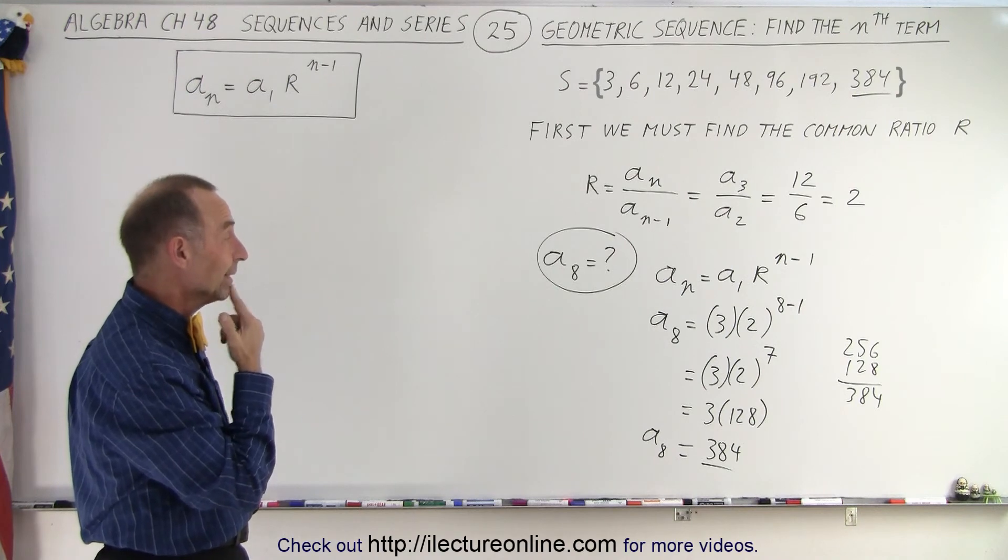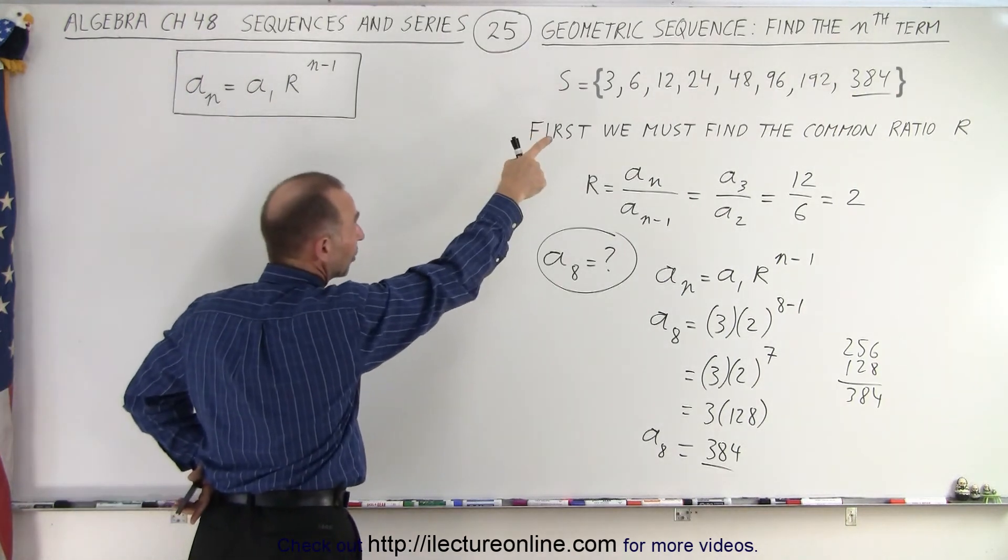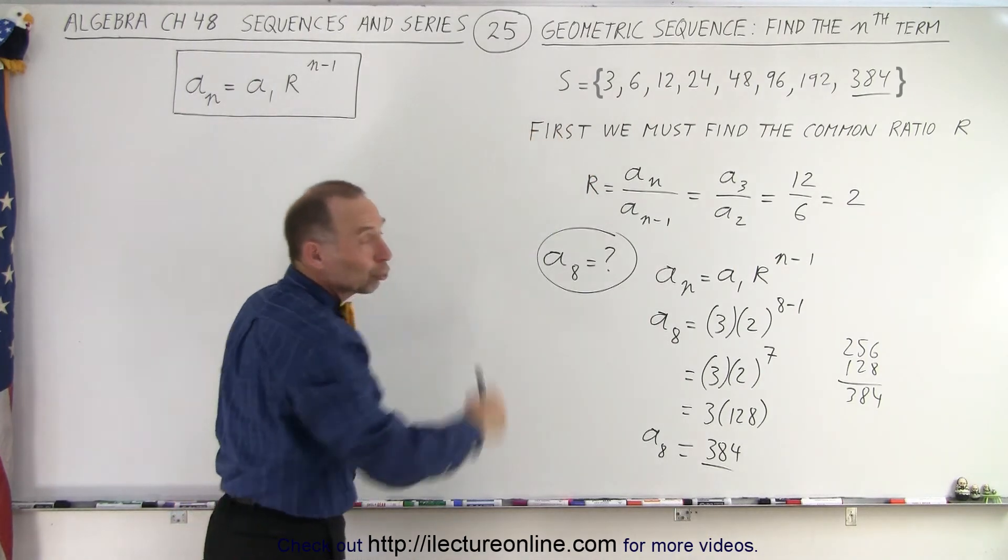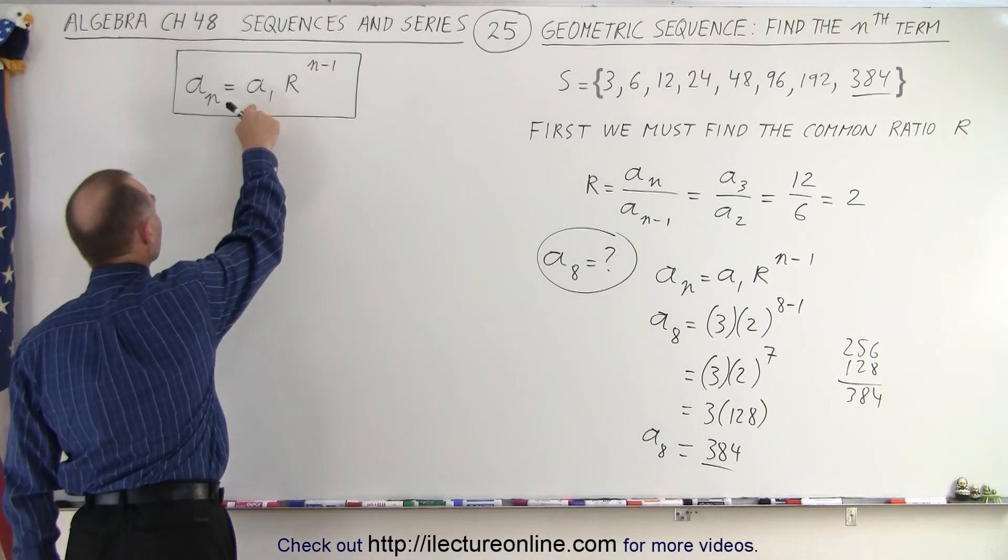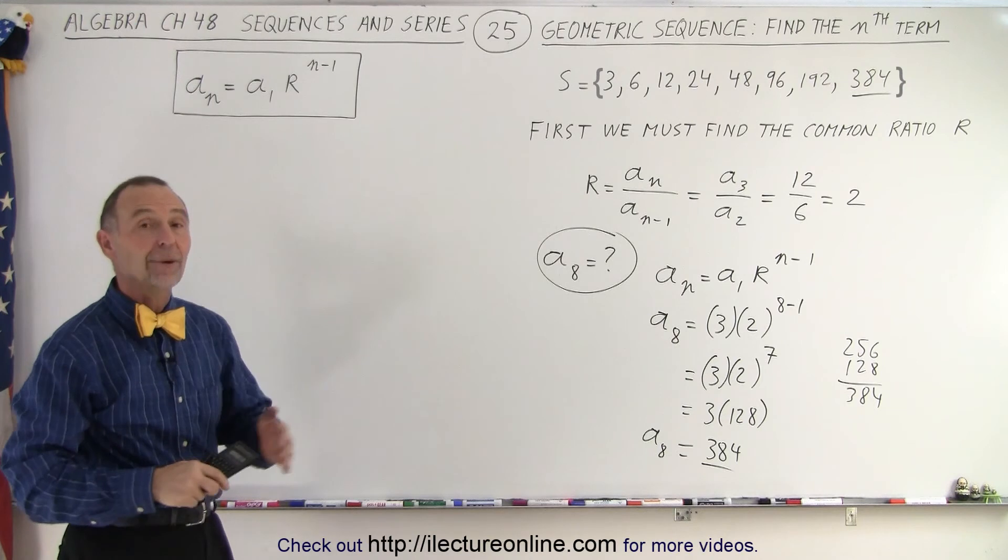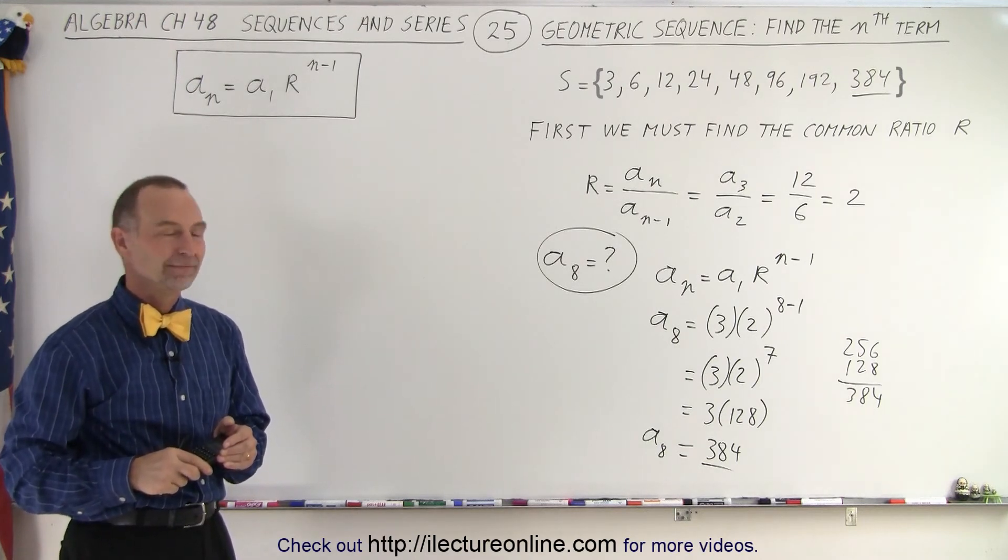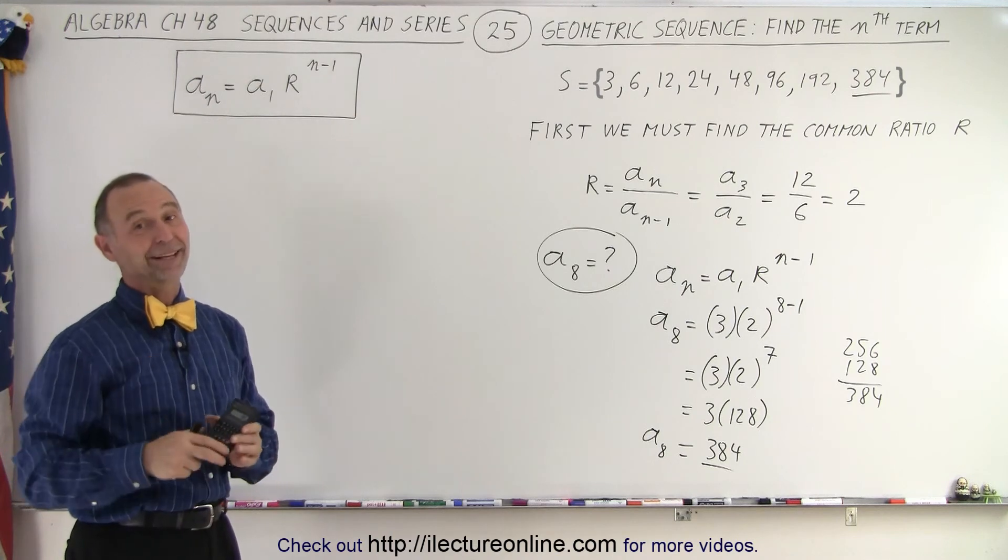So now we have an equation that indicates we have a geometric series, and we want to find the nth term in the series. We find the common ratio, we plug that in here, and it gives us the value for the nth term in the series, in the sequence. And that is how it's done. Where did you get that from? This equation? I will show you on the next video.